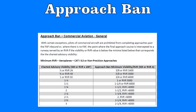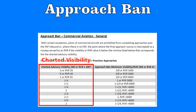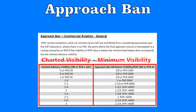So what are the minimum values? Here they are for the general commercial operator version. For any given approach, find the advisory visibility published on your chart and then look in this table at the left-hand column. Once you find your visibility, look across to the right-hand column, and this is the minimum visibility that must be available before you can even attempt the approach. If the visibility is below this value, you cannot try this approach.